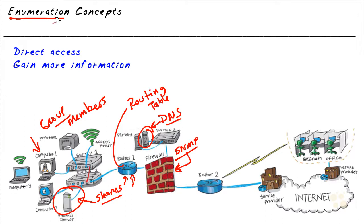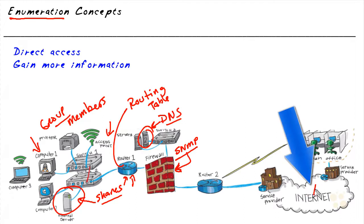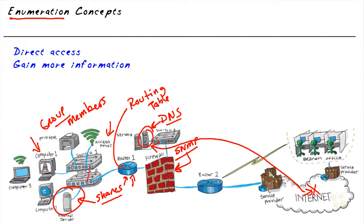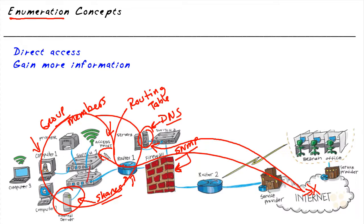Enumeration is traditionally done on the local network itself, since we're probing a lot of devices directly. However, if the attacker is at a remote point, we can still do enumeration if we've taken remote control of a device — for example, on the DMZ or internal on the network. From that compromised device, we do our enumeration to find out more information about the internal network and the resources it has.